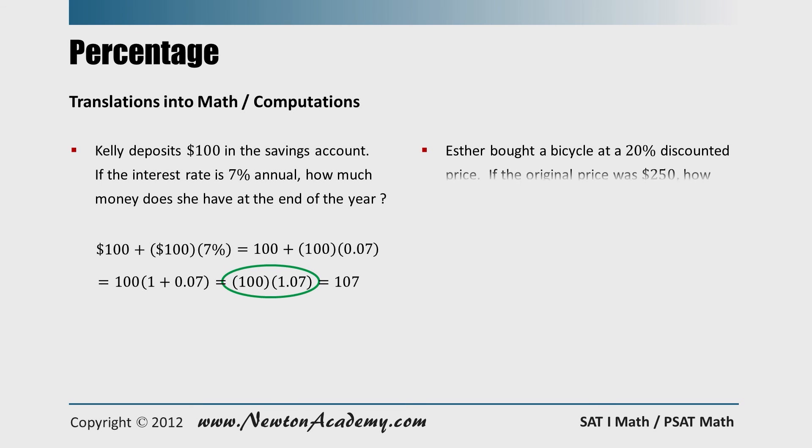And let's do this problem. Esther bought a bicycle at a 20 percent discounted price. If the original price was $250, how much did she pay? Now, the original price was $250, and 20 percent of that is subtracted. So after changing 20 percent to 0.2 and combining with 250, we have 200.